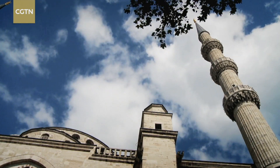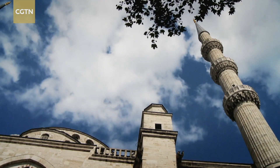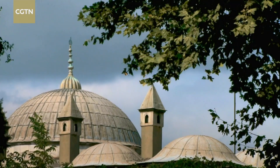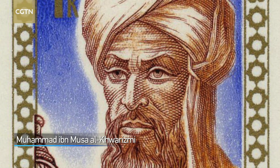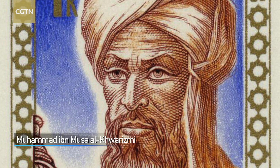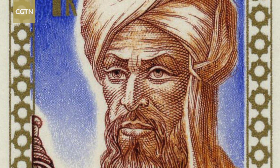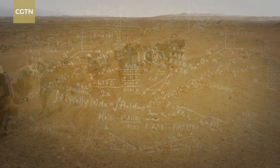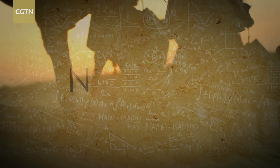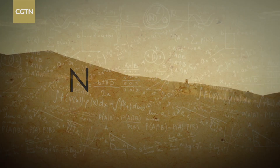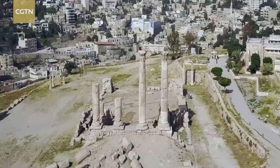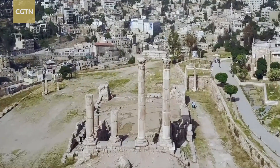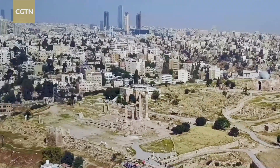However, Indian numerals undertook a major detour before going global. First, Arab mathematician Muhammad ibn Musa al-Khwarizmi in the 9th century codified them in a textbook on the Hindu art of reckoning. In Europe, this Hindu-Arabic numeral system became known simply as Arabic numerals.